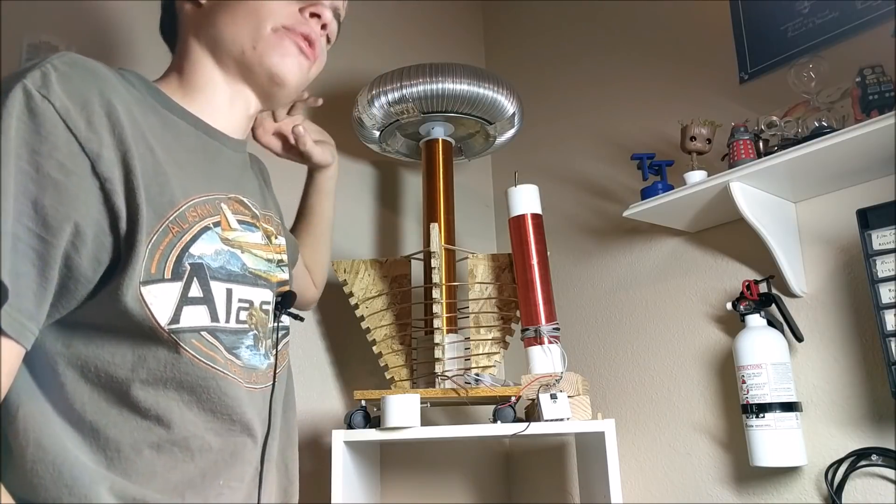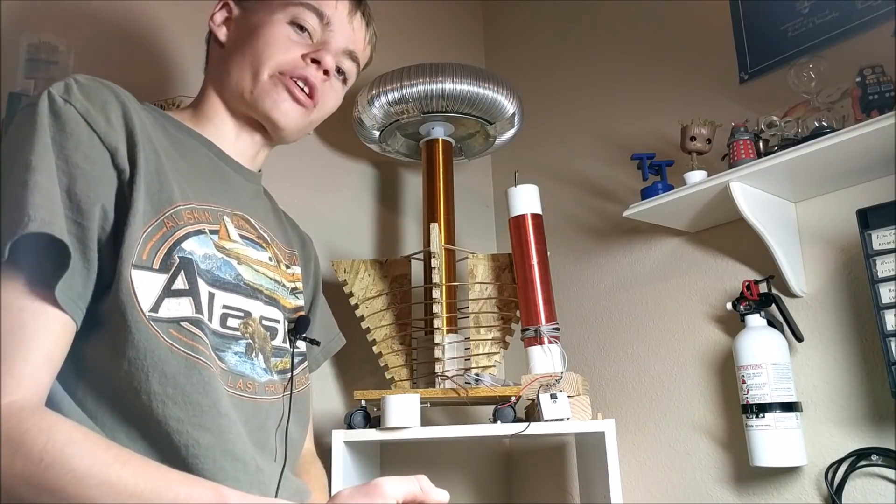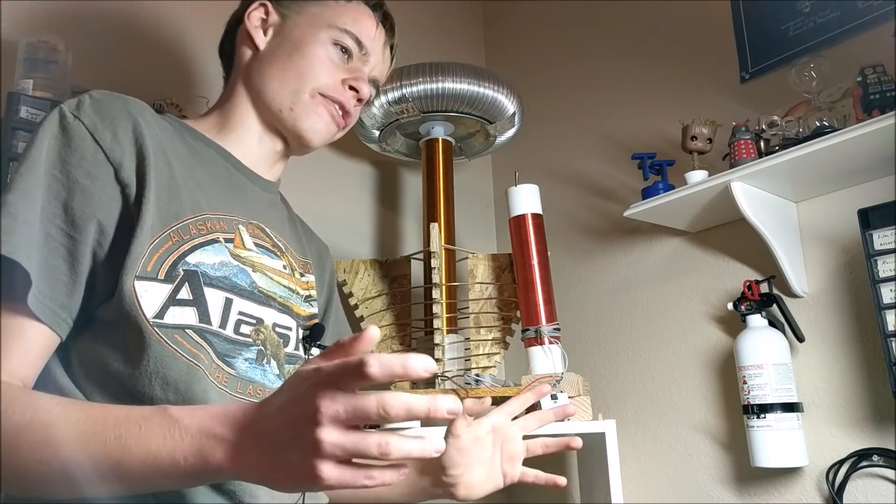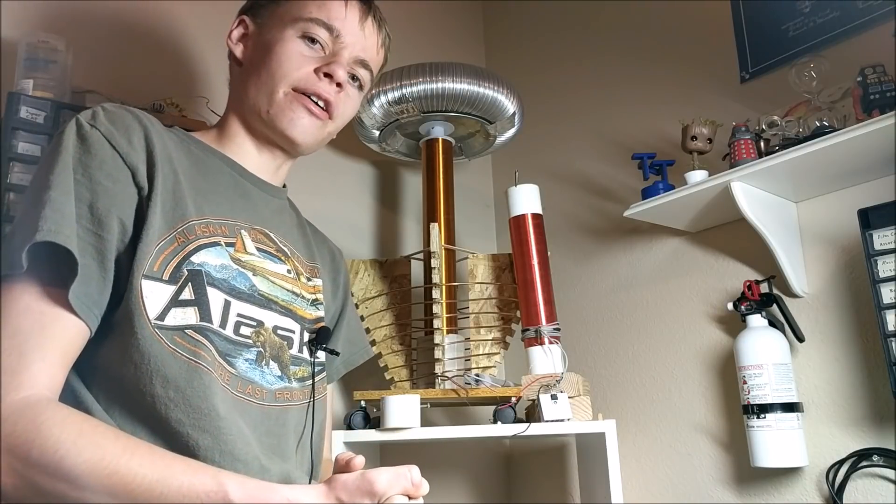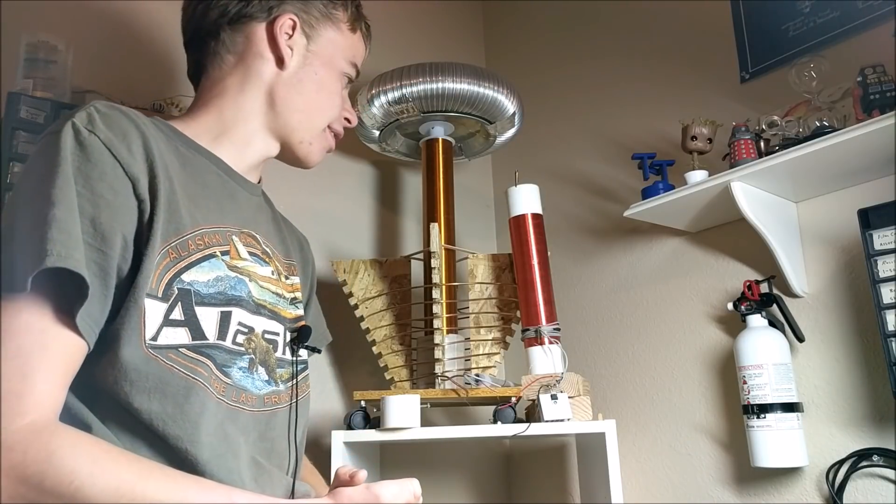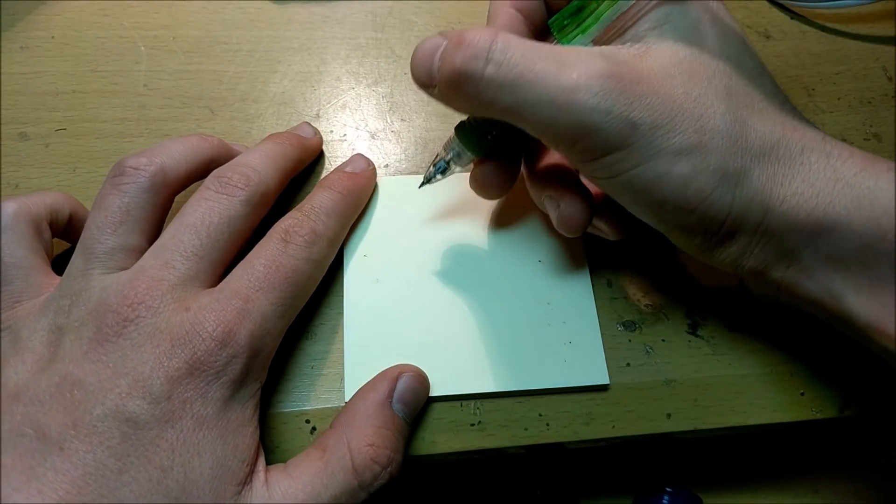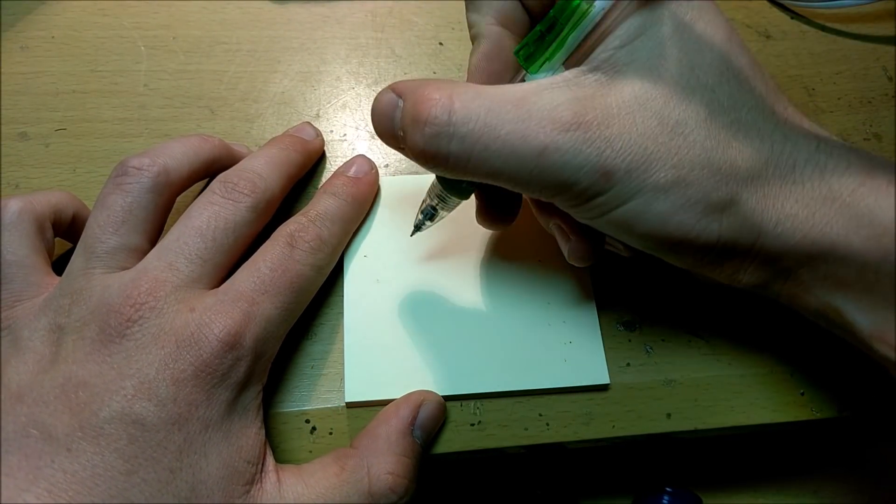Now, these arcs will be shooting in all directions when it works properly, but it hasn't worked properly yet, because I don't have a good enough capacitor bank. But the rotary spark gap works perfect for this Tesla coil. Alright, let me give you a brief explanation on the basics of a Tesla coil.